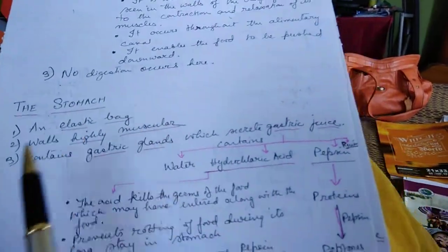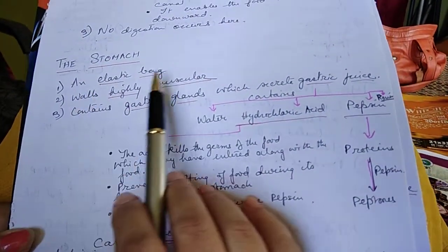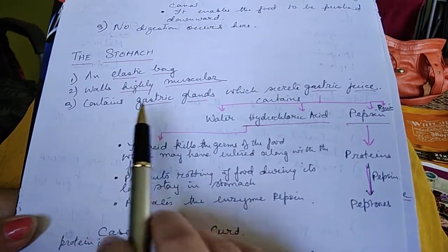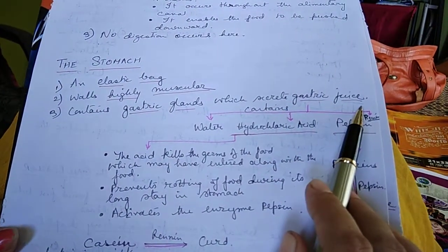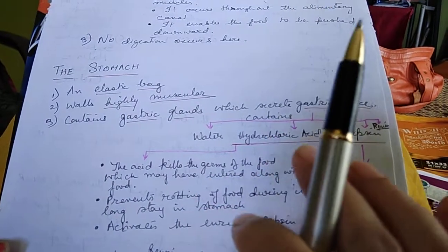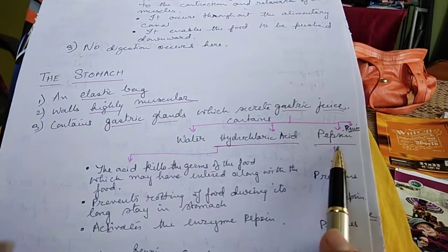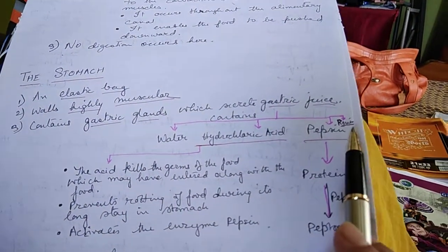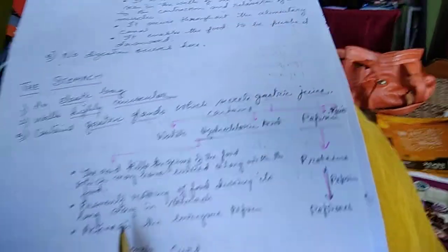The third part is the stomach. It's an elastic bag with highly muscular walls. It contains gastric glands which secrete gastric juices. The gastric juice contains water, hydrochloric acid, pepsin, and to a small extent renin. Pepsin and renin are enzymes.